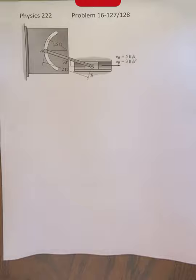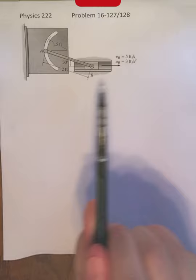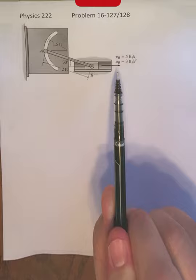We have this link AB. That's going to be our object undergoing general planar motion. We have point B connected to this piston moving along this purely horizontal channel. Consequently, we know its speed and acceleration, both of that point, both purely horizontal.